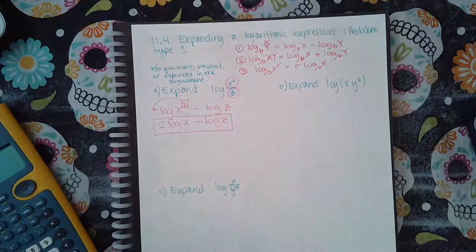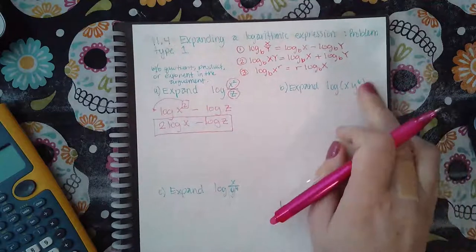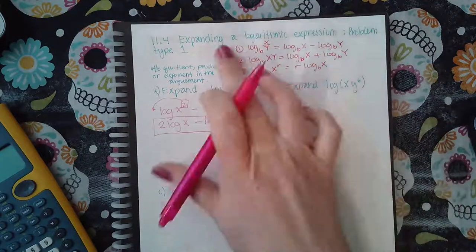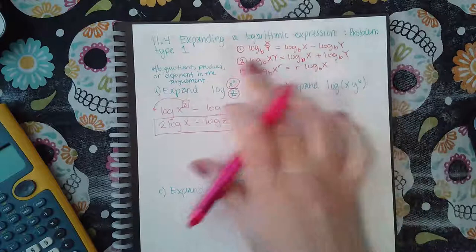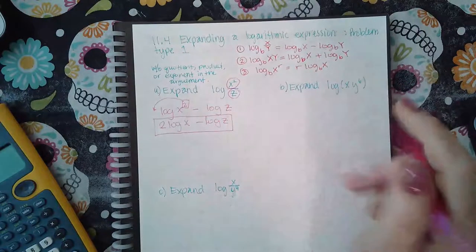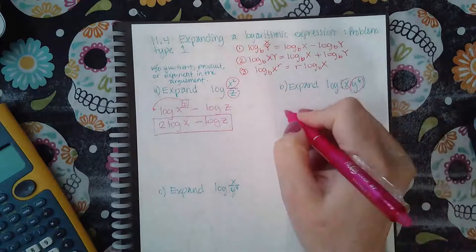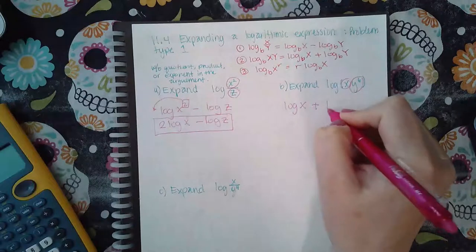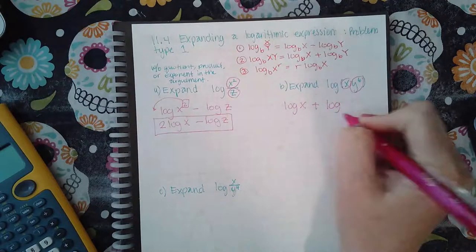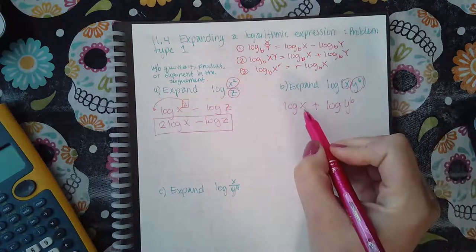Now if we go on to side b, there are no quotients here—there's no division going on—so I don't have step one. But I do have a step two, and so I am going to apply this property. So I do have a product, this times this, right? So it's going to become log of the first factor plus log of the second factor.